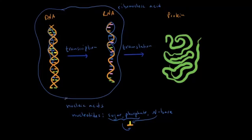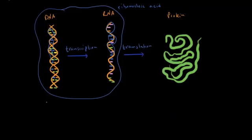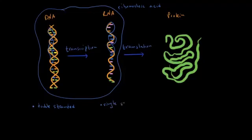What about some of the differences between DNA and RNA? The first obvious difference is that DNA is double-stranded and RNA is single-stranded, usually. There are some exceptions — some viruses have double-stranded RNA — but in general, RNA is single-stranded.